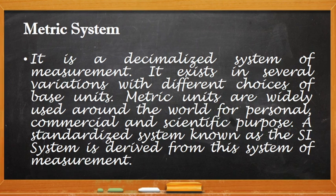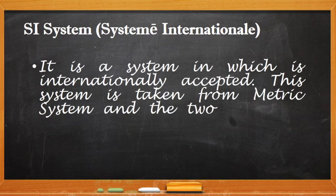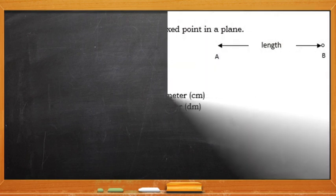We have the SI system or otherwise known as the Système International. It is a system which is internationally accepted. This system is taken from the metric system and the two have the same units except that the SI system uses SI prefixes like kilo, milli, centi. That is the difference between SI system and the metric system.